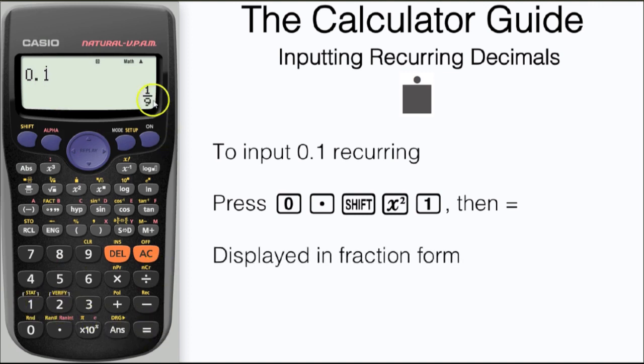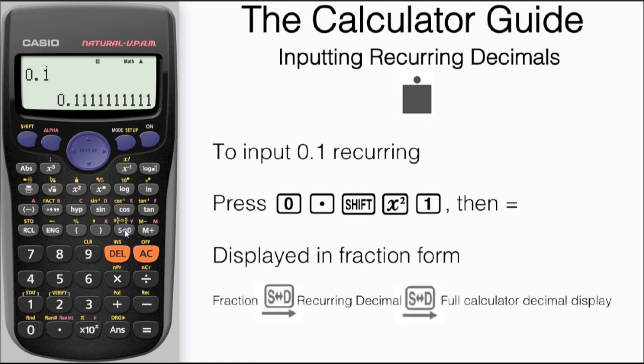We have our display in fraction form, 1/9th. But we can change between the recurring decimal that we inputted and a full calculator display by using the SD button.